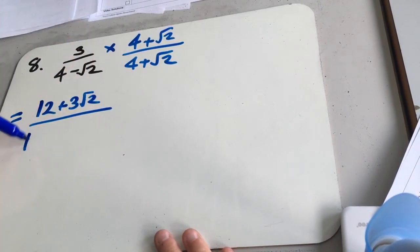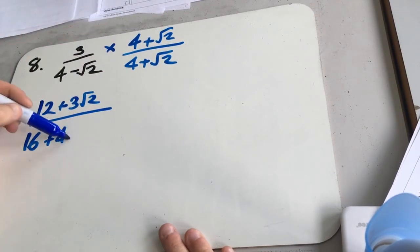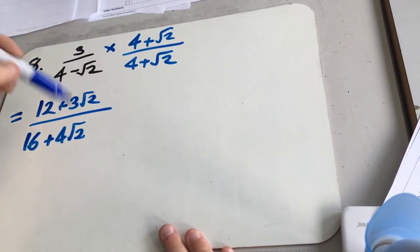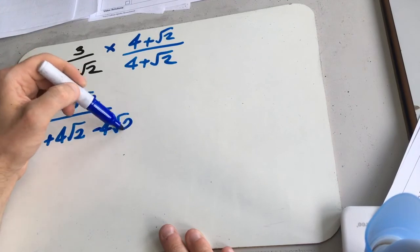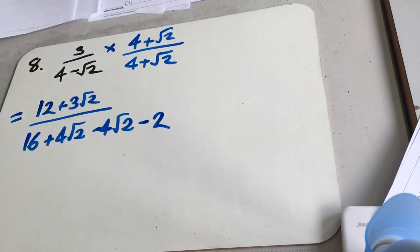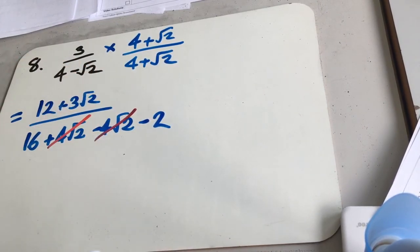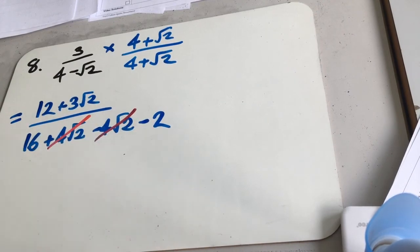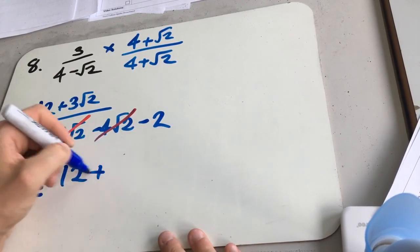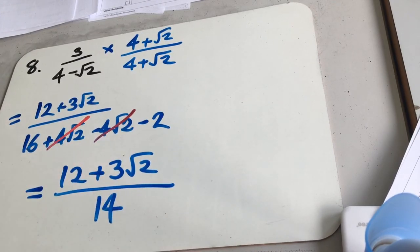4 times plus root 2 is plus 4 root 2. 4 times minus root 2 is minus 4 root 2. Then root 2 times minus root 2 is going to be minus 2. So same as last time, these two middle terms are going to cancel out. We're going to get 16, take 2 is 14. So we get 12 plus 3 root 2 over 14.